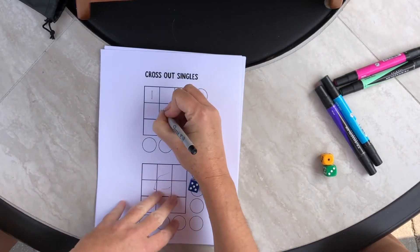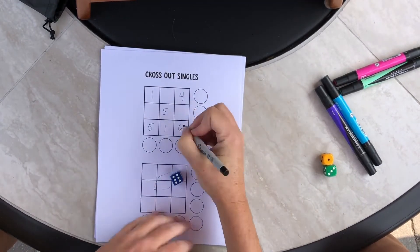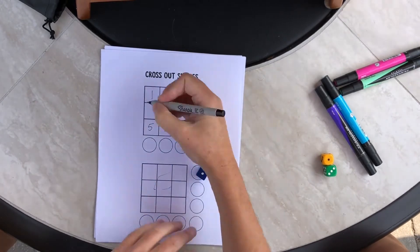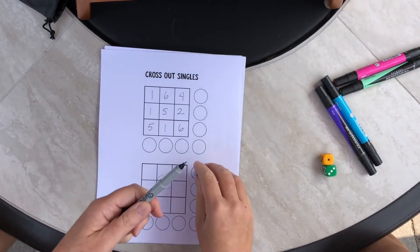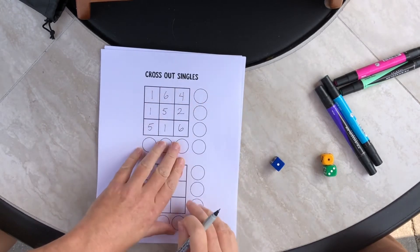And you can write them in any one of the boxes. Okay, and so we just go until all nine boxes are filled in. All of our boxes will look a little bit different.